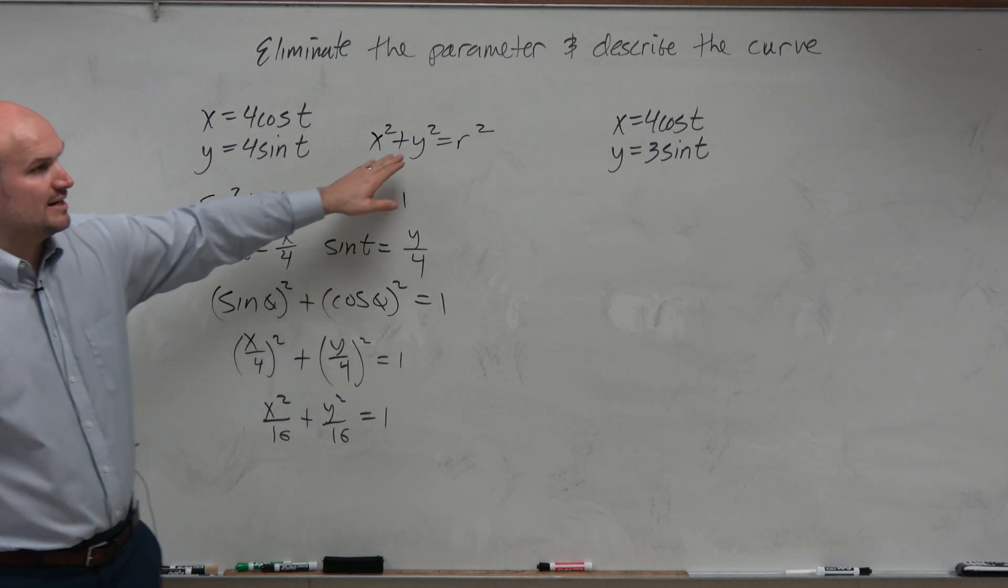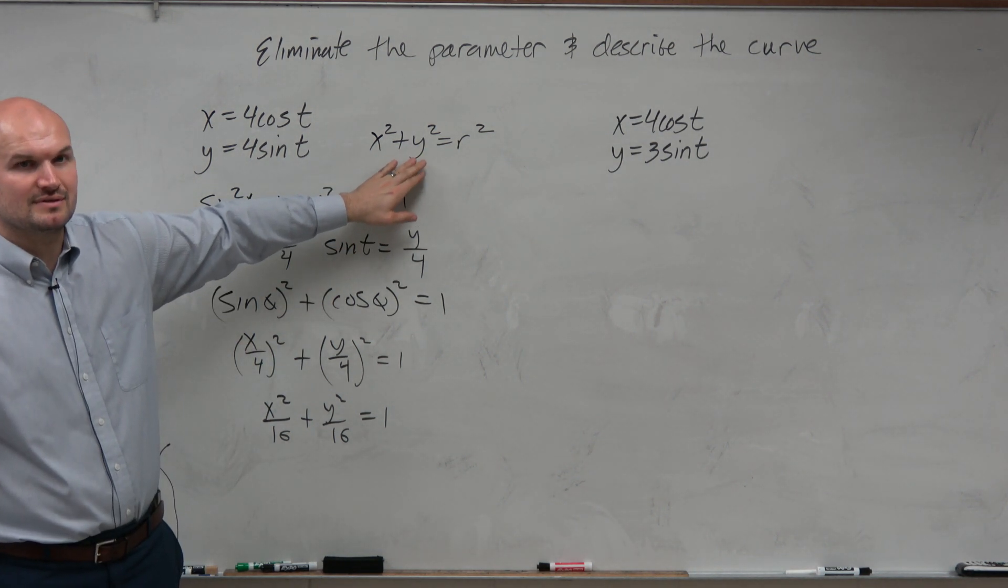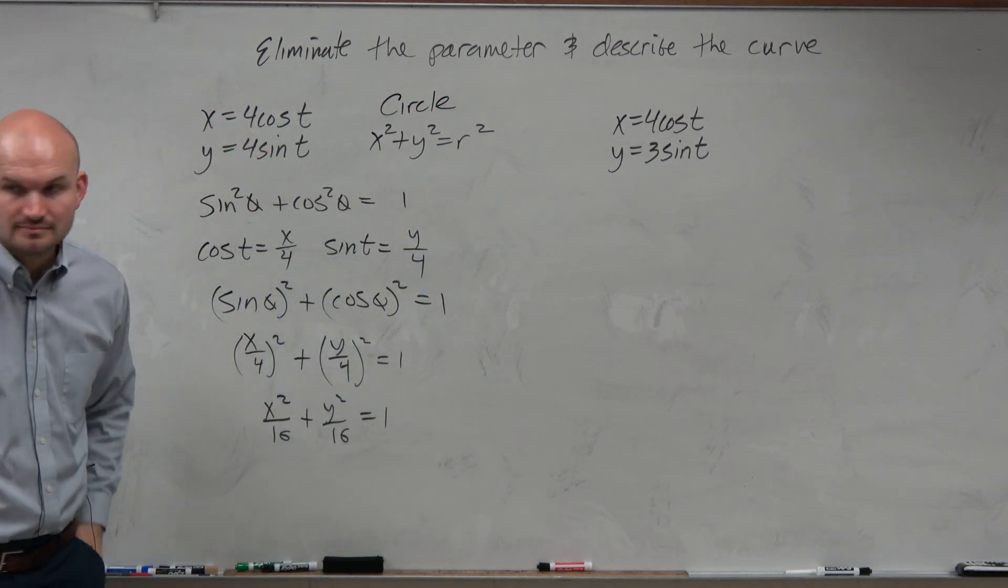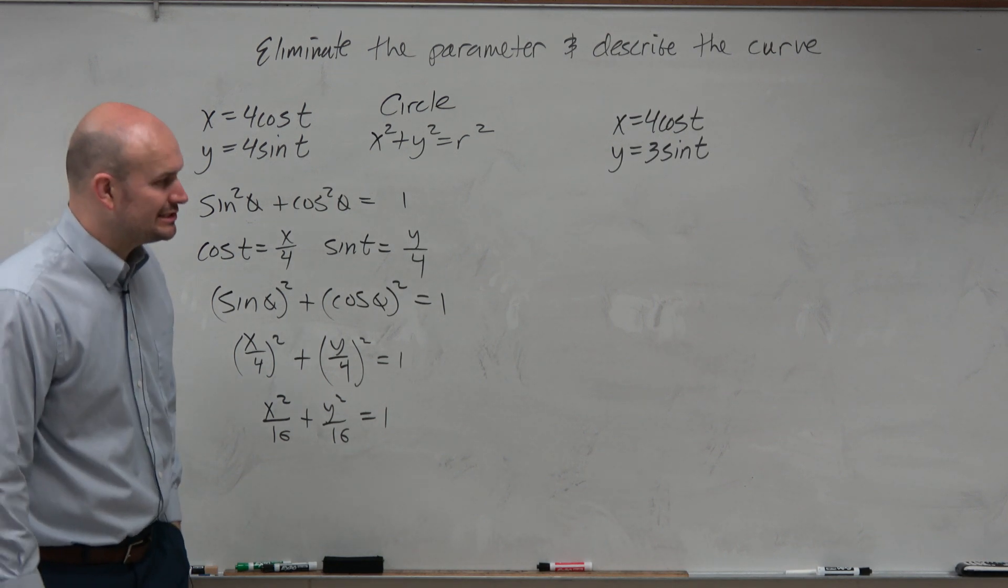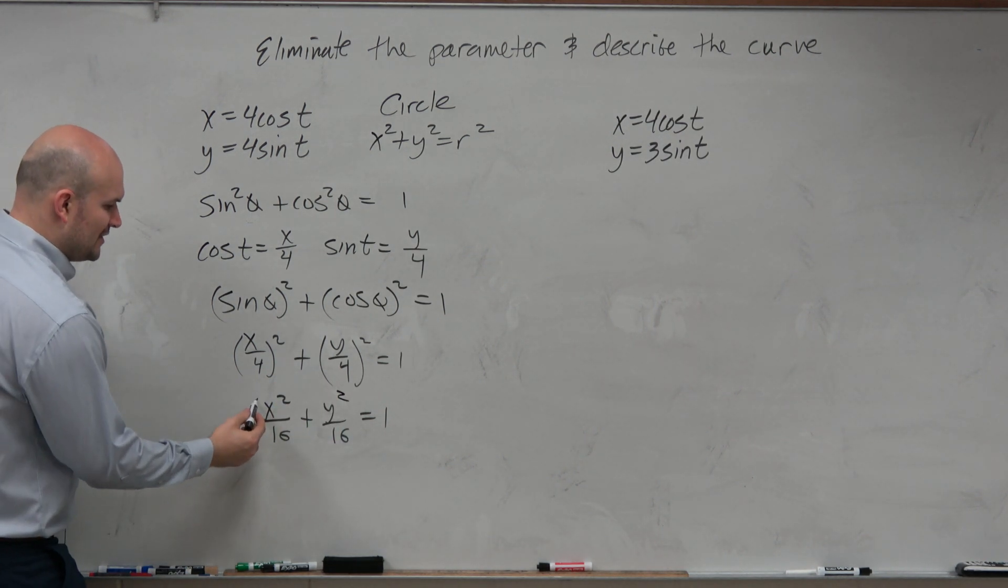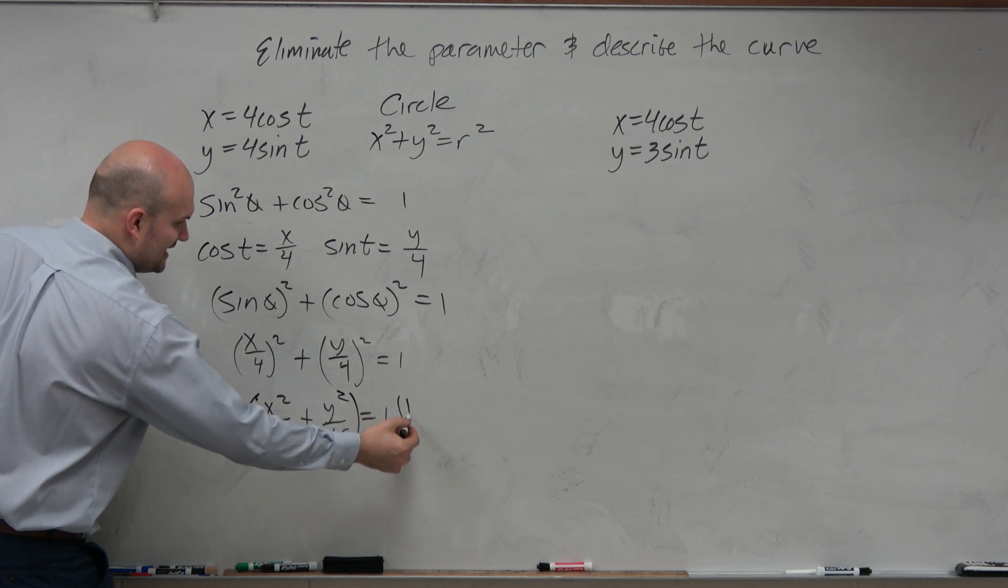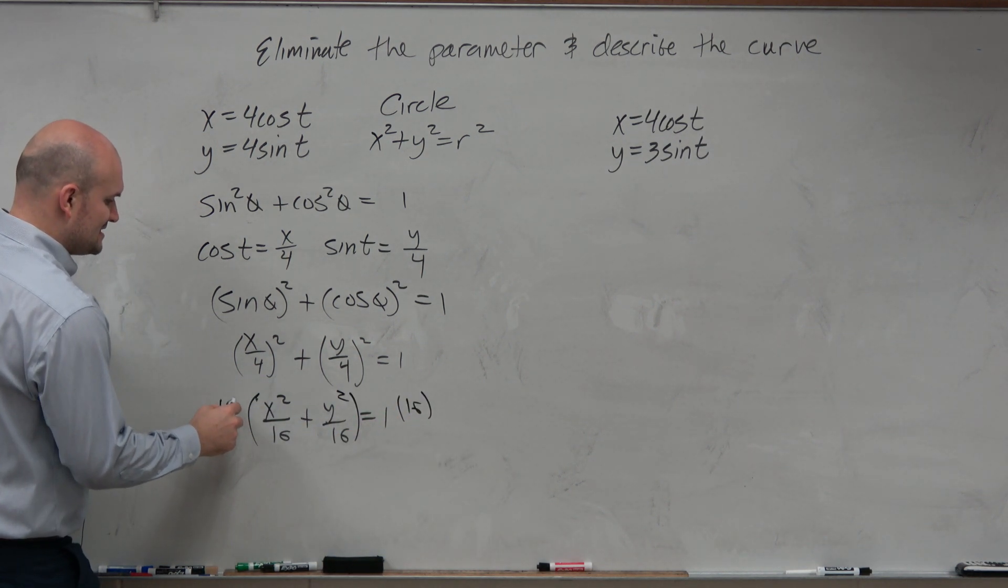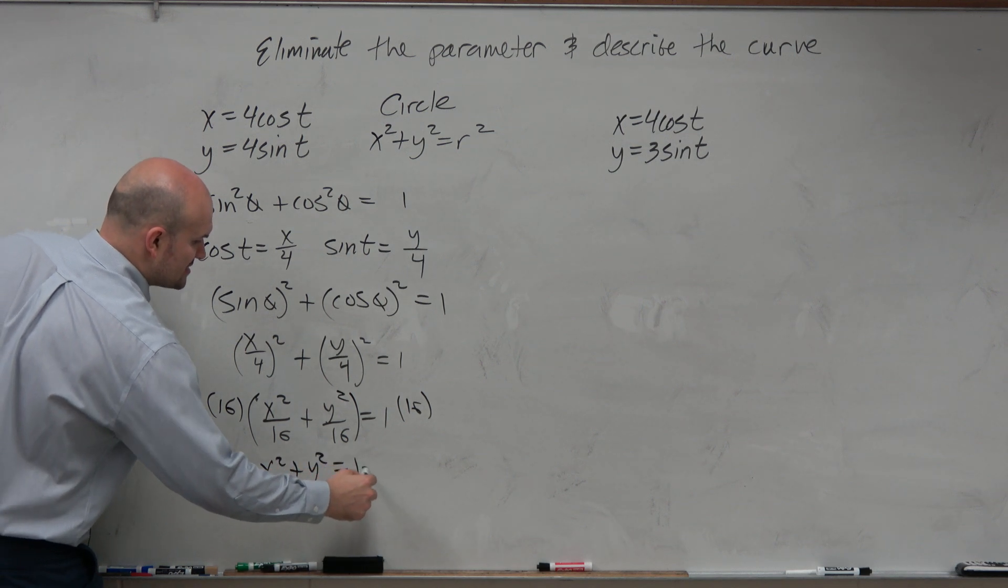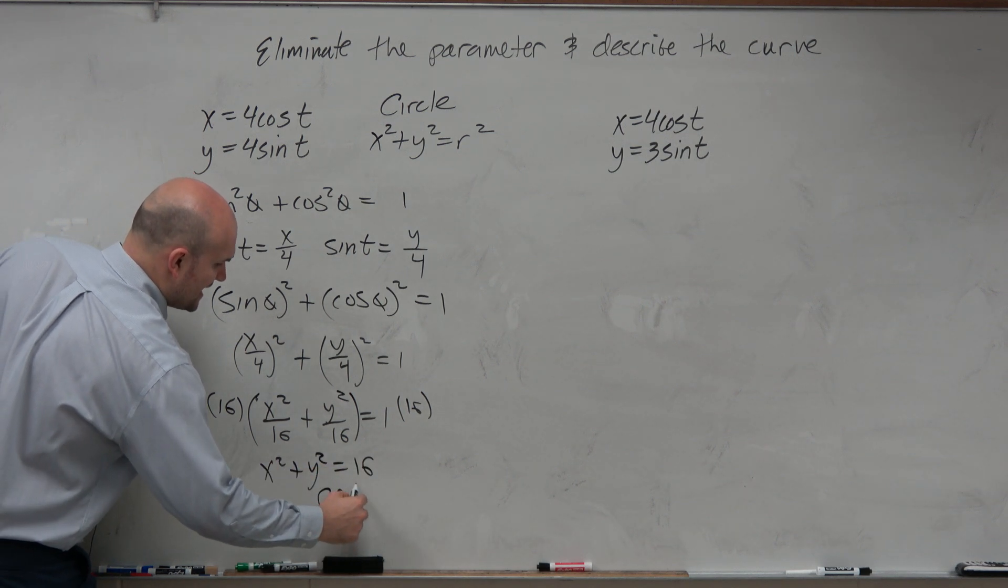Yeah, but what does that represent? What does this get the equation of? That's the equation of a circle, right, from geometry class. So this doesn't exactly look like that. However, if I multiplied by 16 on both sides, I would get x squared plus y squared equals 16, which gives me a circle.